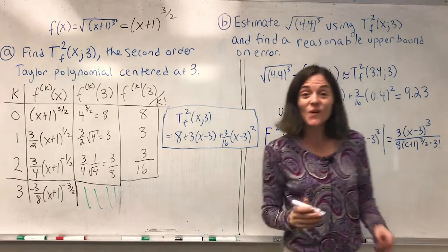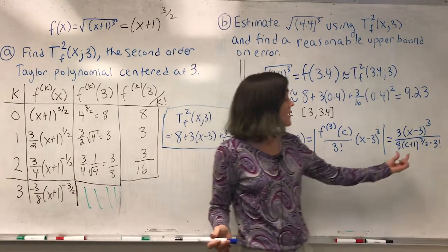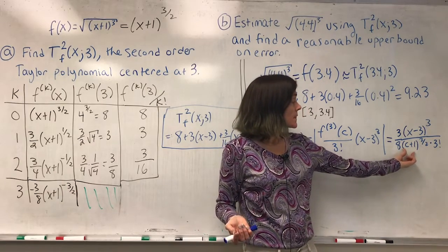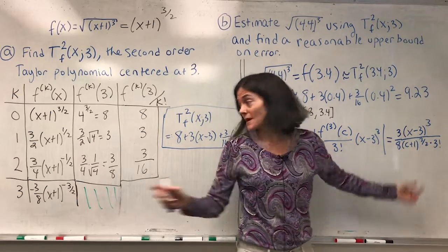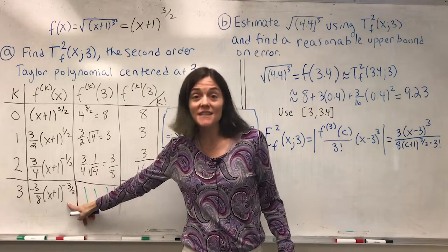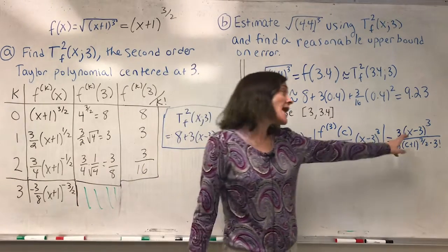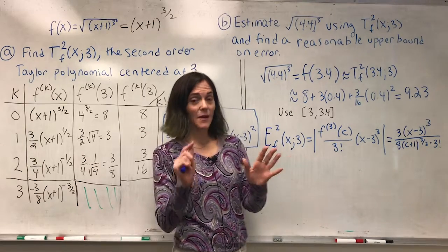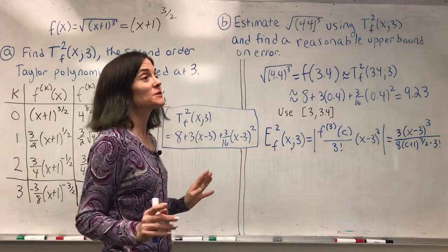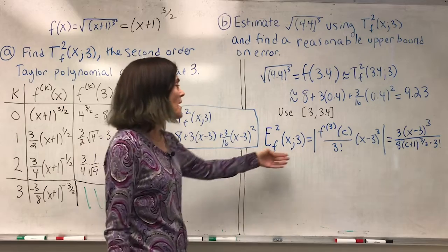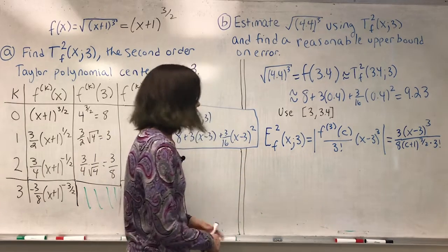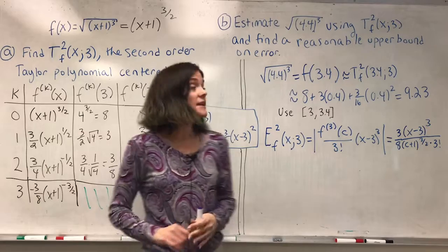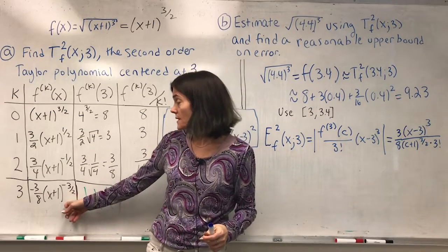And my next goal is to see how large can this part with the c be, this derivative, how large can that be on the interval? And how large can (x minus 3) cubed be on the interval? And I will have two less than or equal to statements and altogether have an upper bound for the error.